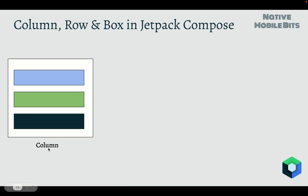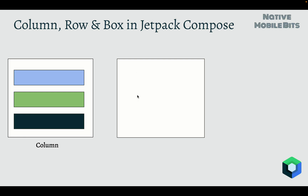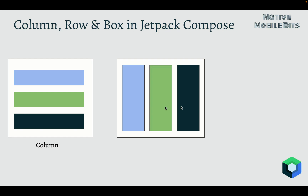Let's take another example where we have an empty space and want to put composables in a horizontal way — first child, then another, then another, all in the horizontal direction. For these kinds of scenarios we can use the inbuilt Row composable. Inside Row, children are arranged horizontally. Row behaves exactly like LinearLayout with horizontal orientation, where all children follow the horizontal left-to-right direction.